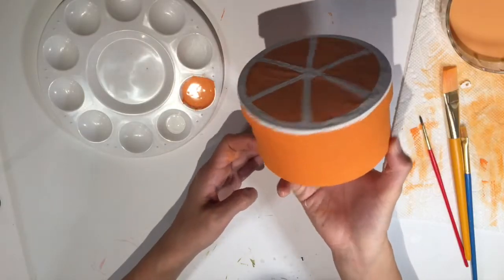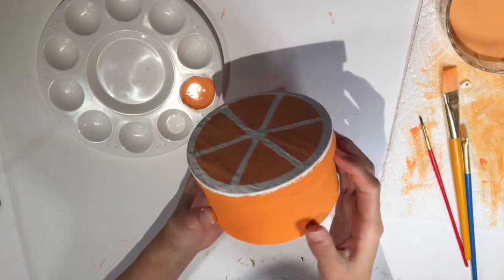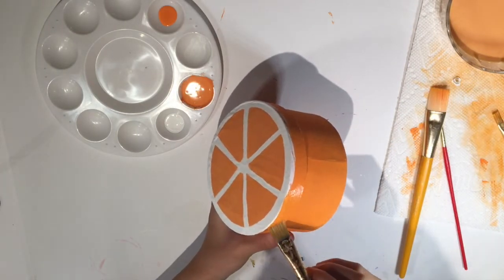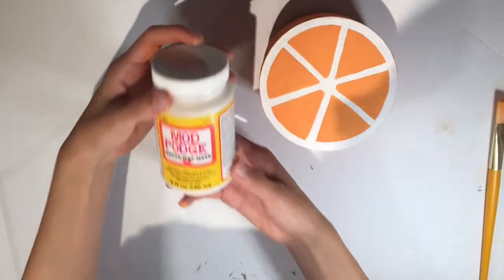Now I'm basically done, except for the fact that the white has kind of bled onto the sides, so I'm just going to fix that really quick by painting some orange back on top of it. Now that that's done, I can clean up and get out my Mod Podge.